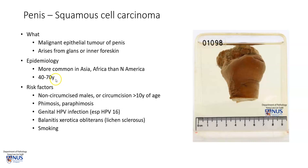It usually occurs in middle-aged to slightly elderly patients. It occurs with greater frequency in non-circumcised males, or if circumcision occurs at a later age — after 10 years of age — or if there is a background of phimosis or paraphimosis. It is also associated with HPV infection, which is quite similar to cervical cancer.